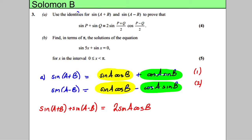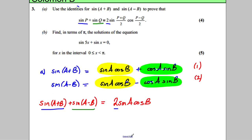Now we're very close to what we want. I've got a sine of something added to a sine of something different, and that's equal to two lots of sinA cosB.